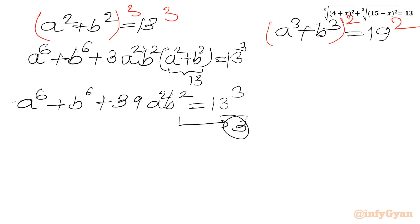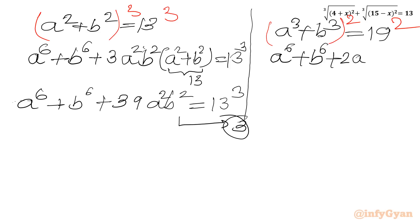Now squaring Equation 2: a⁶ + b⁶ + 2a³b³ = 19² = 361. This is Equation 4.